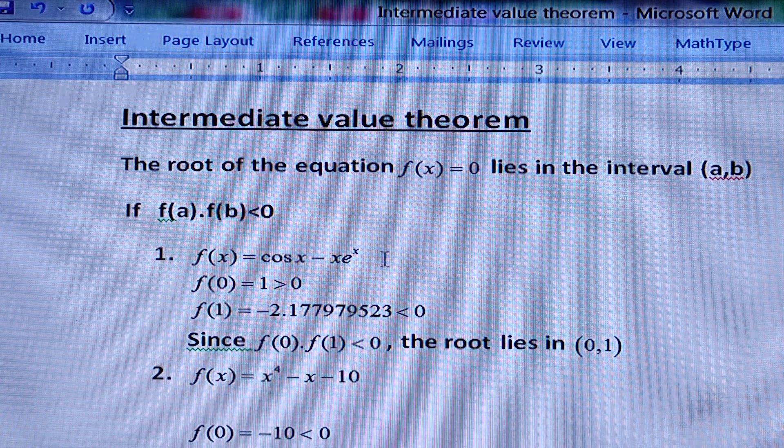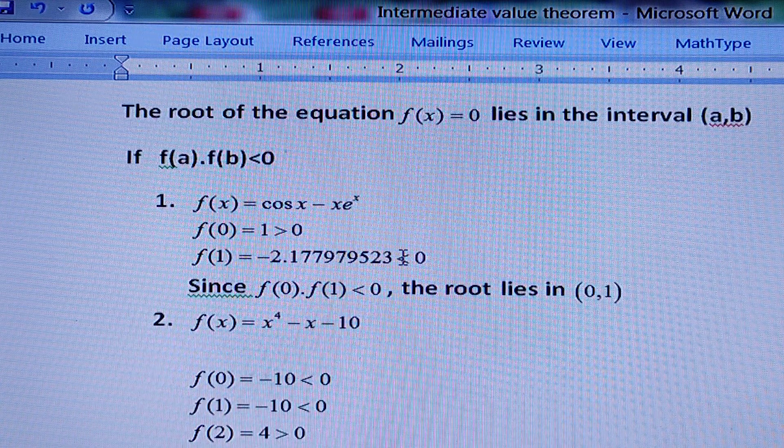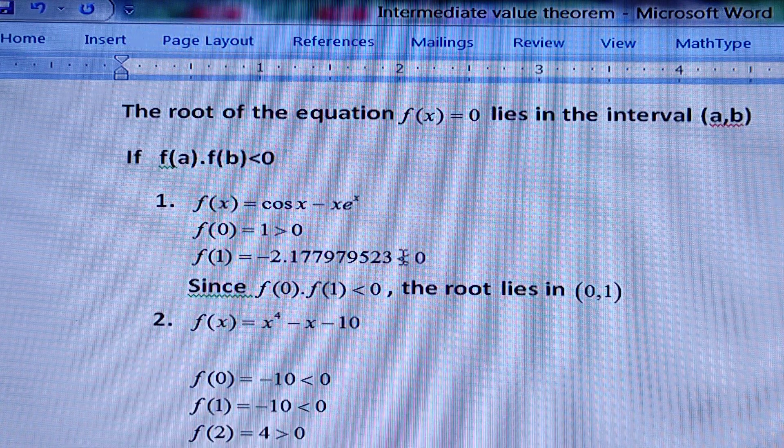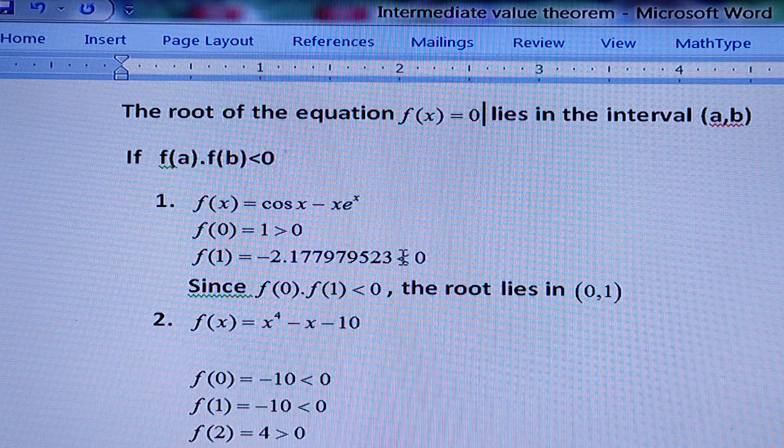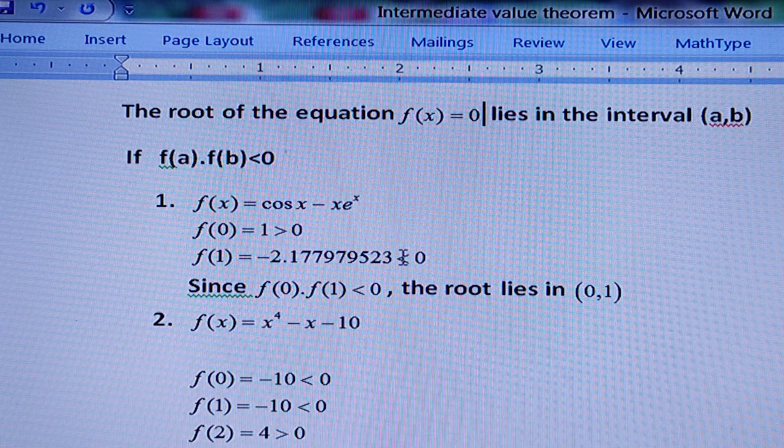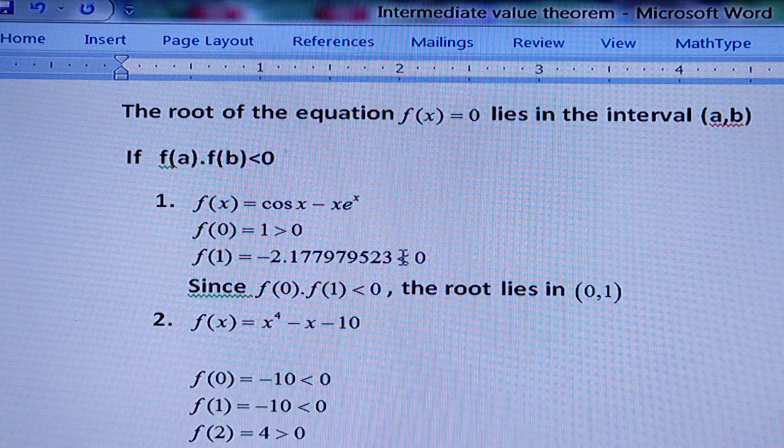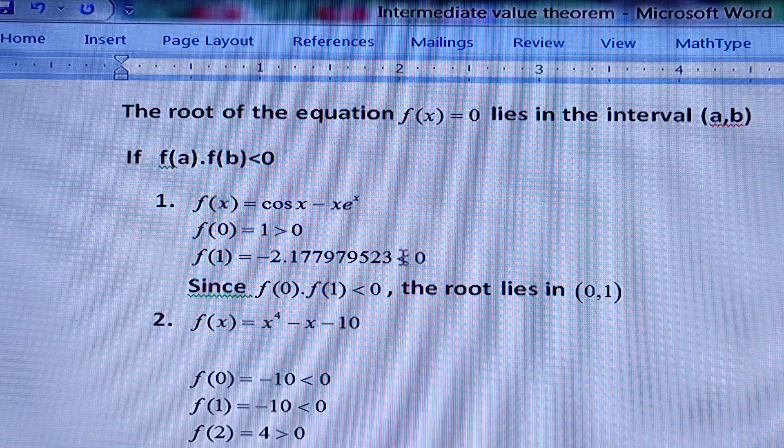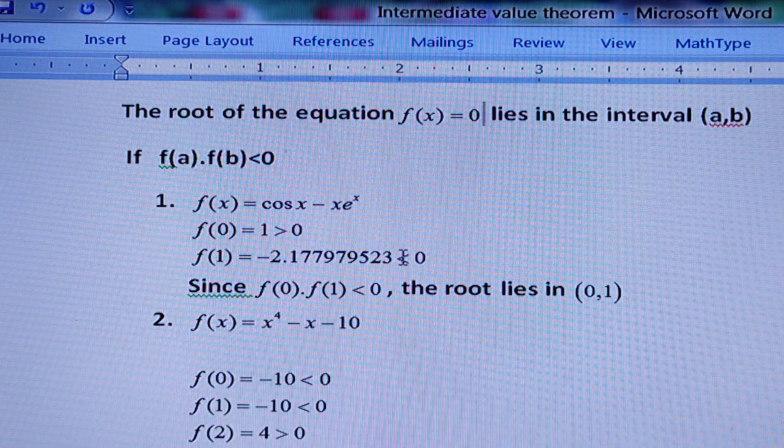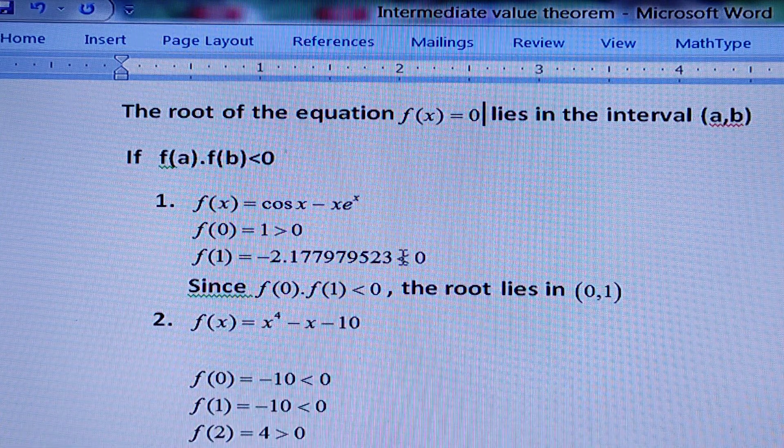Here the first example I have taken: f(x) = cos x - xe^x. So put x = 0. And remember, a very important point I am going to tell you: for trigonometric functions, you have to solve in radian mode, not in degree mode.